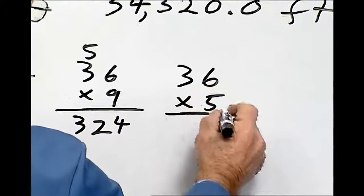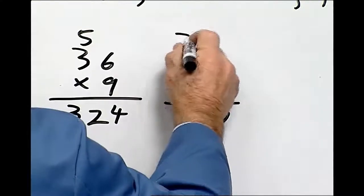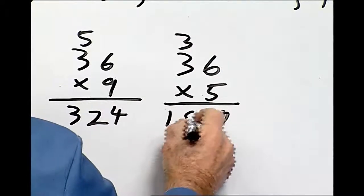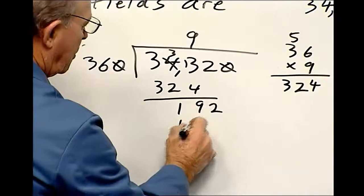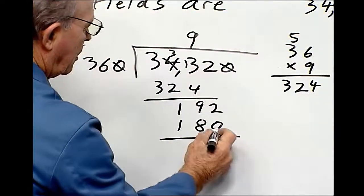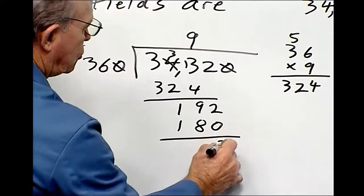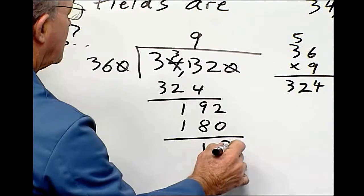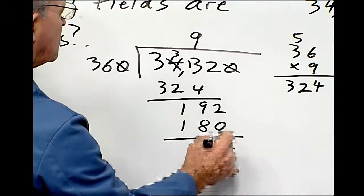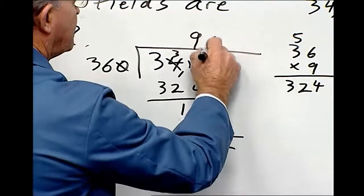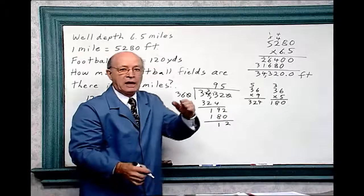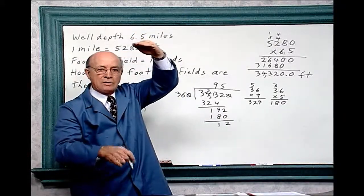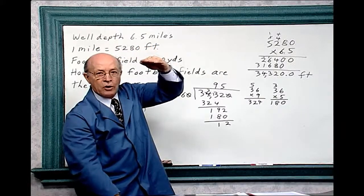5 times 6 is 30. 5 times 3 is 15, plus 3 is 18. So this would be 180. 0 from 2 is 2. 8 from 9 is 1. Bring down... We don't have any more, do we? So that would be 5. So if you could envision a 95 football field from the bottom of that ship down to where that drill bit is into that gulf floor.